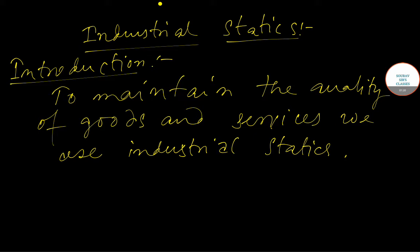It is obvious because the name itself says industrial statistics, so it is mainly used for industrial purposes. In the industrial context, it is used to maintain the quality of goods — that is, the goods you are buying, what is their quality, and how is the service of the goods. It also involves a broad range of statistical tools, but maintaining and improving quality involves an overall approach to the management of industrial processes that transcends the use of specific tools.